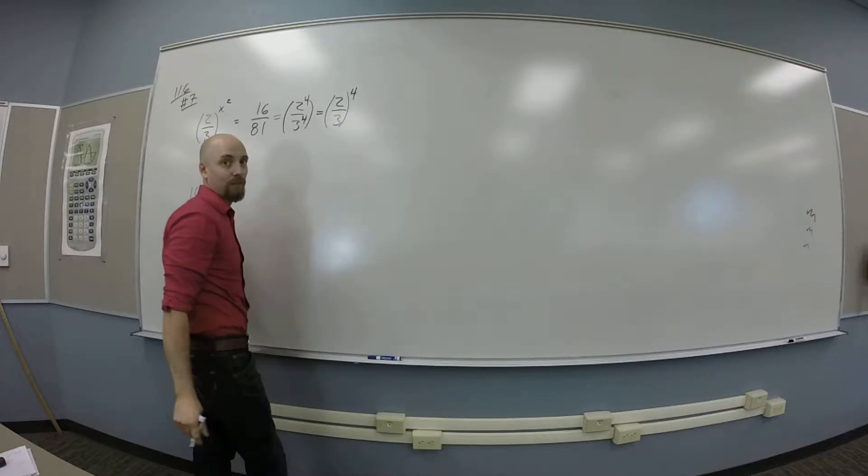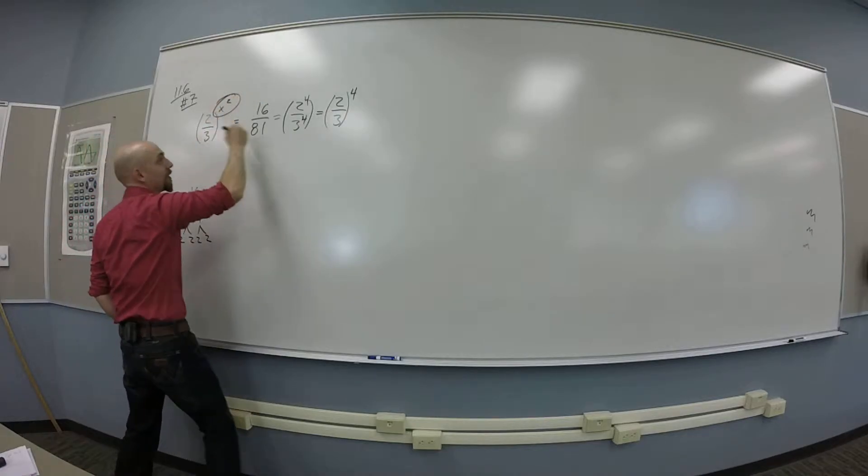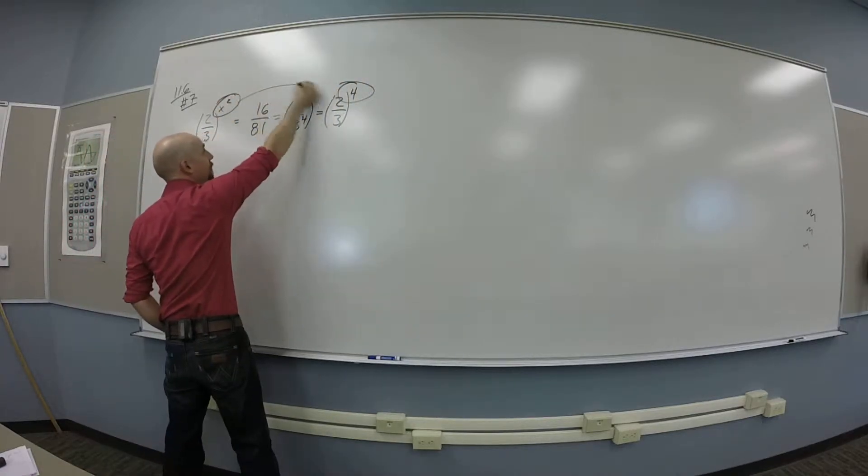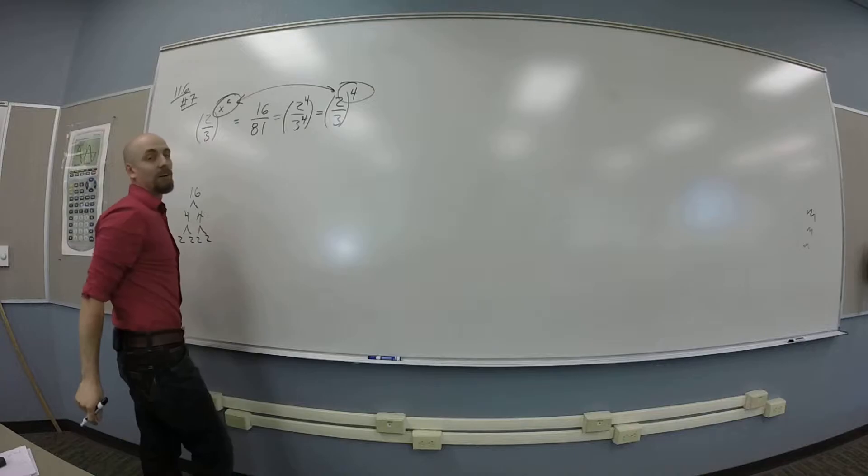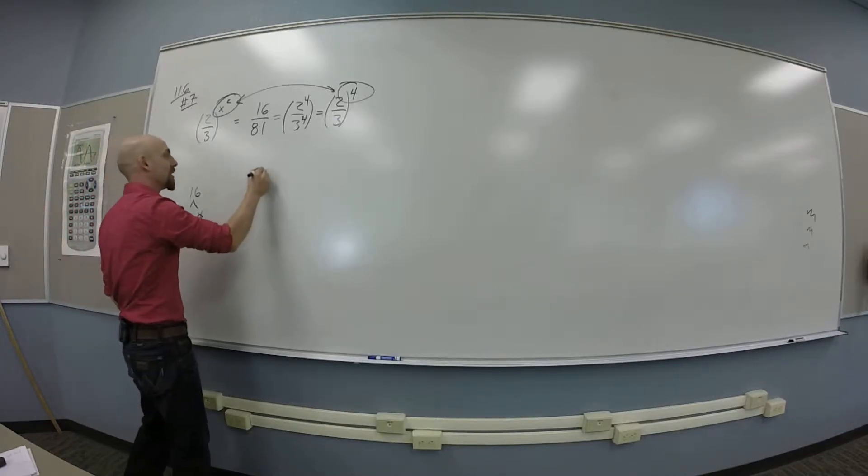And so x squared is equal to 4. Yeah. So now I might think this thing and this thing have to be the same. But if I'm multiplying some 2 thirds together, that's the same thing as multiplying... Four of 2 thirds together. Those have to be the same thing. Okay.